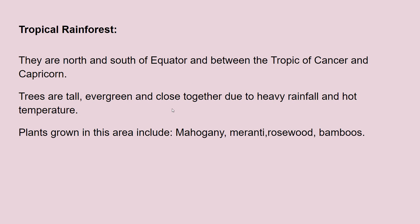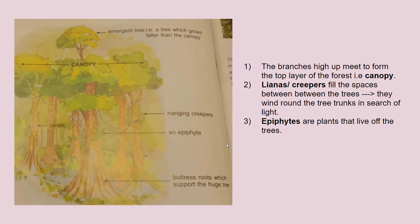For tropical rainforest, the trees are tall, they're evergreen, and they are very close together, resulting in dense vegetation. There are specific tree types found in tropical rainforest. The branches meet up to form a top layer called the canopy. Then we have lianas, which wind around the trees and move high up in search of sunlight. We also have epiphytes — small plants that come out of other trees and live off them.